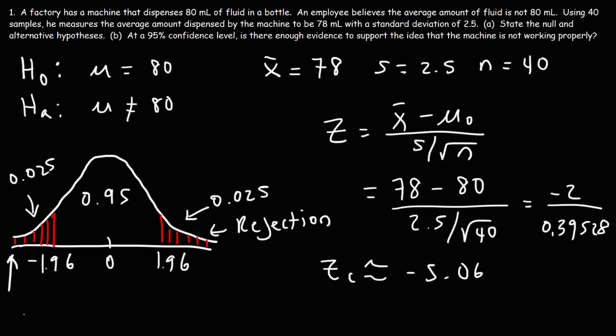If we place that on the graph, it's in the far left — notice that it's in the shaded area, the rejection region. So this tells us that we should reject the null hypothesis. We can say that with a 95% level of confidence, we cannot accept the null hypothesis that the average amount of fluid dispensed by the machine is 80 milliliters. With 95% confidence, we believe that the machine is not working properly.